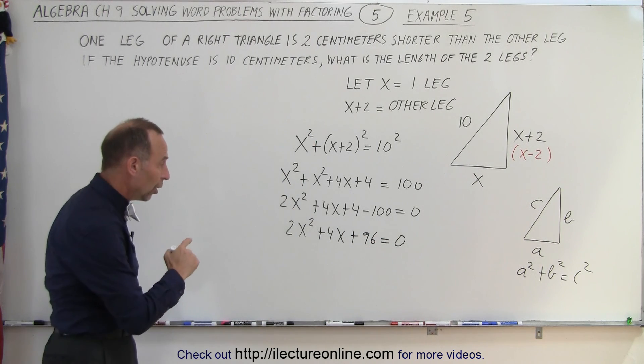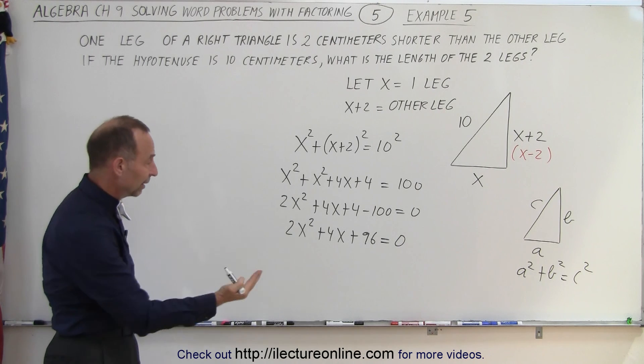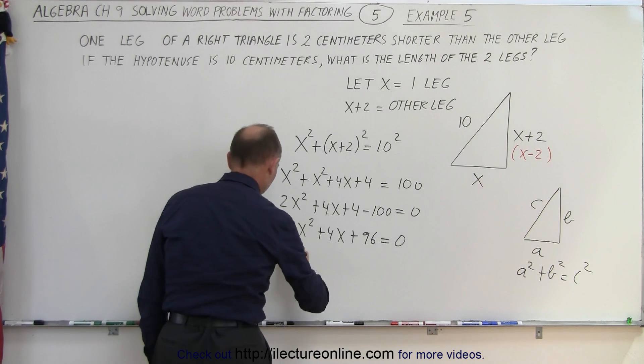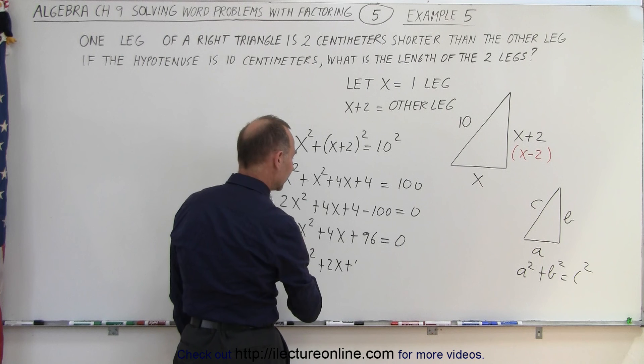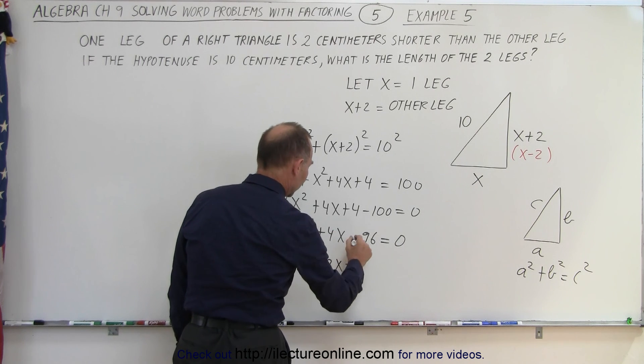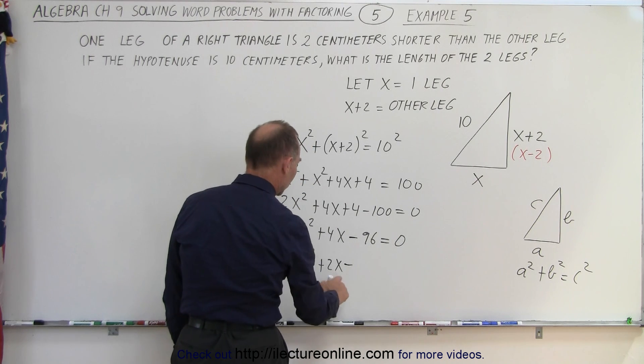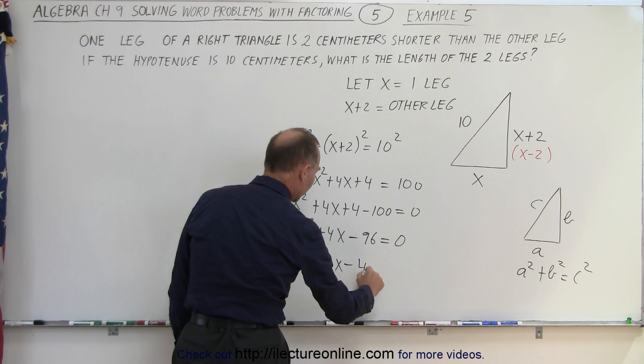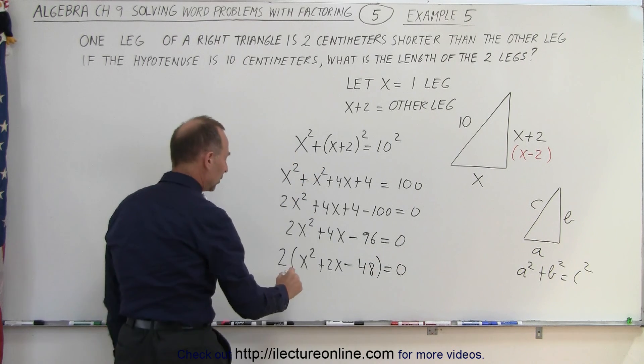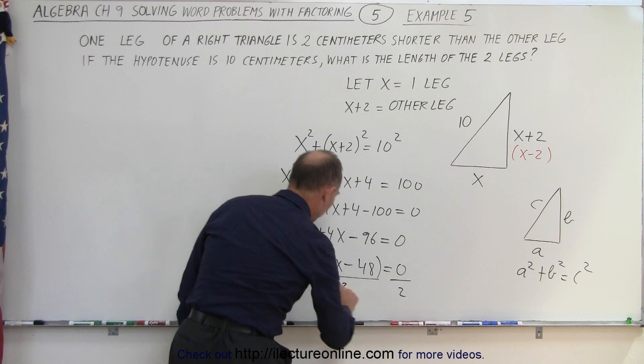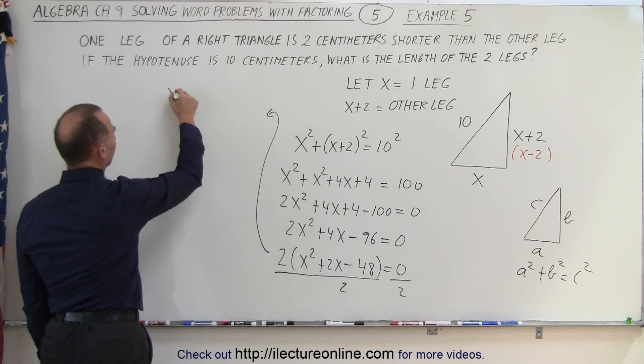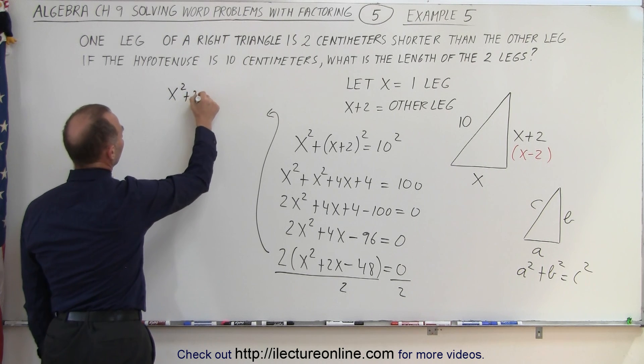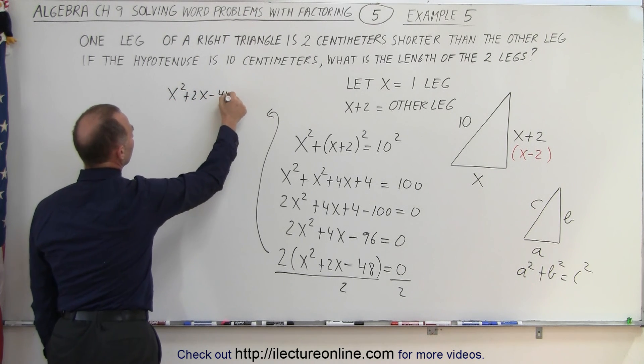But now notice that all the numerical coefficients are even, so we can factor out a two. That's two times x squared plus 2x plus—oh wait a minute. That's not plus; this is minus and this is minus because four minus 100 is minus 96. So 2 times (x squared plus 2x minus 48) equals zero. Then we divide both sides by two, which means we end up with x squared plus 2x minus 48 equals zero.